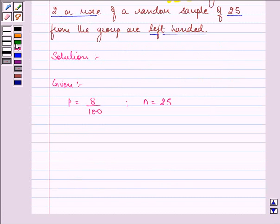So let us find out the value of lambda first. It is N into P, that is 25 into 8 by 100, which gives us the answer as 2.